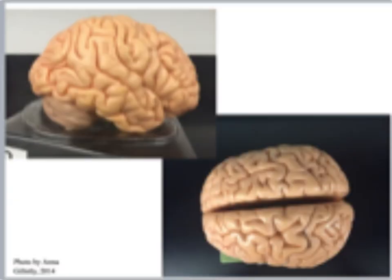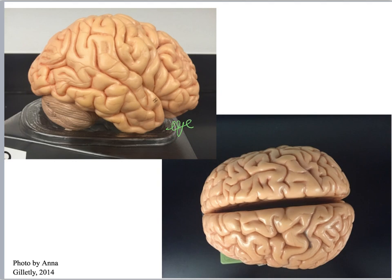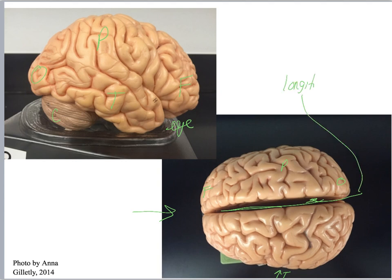Here we've got the brain models, and you've got variations of these with the practice atlas and the APR. F is for frontal, T is for temporal, P is for parietal, O is for occipital, C is for cerebellum. You can't see the insula because it's not opened up. This whole thing right here is the longitudinal fissure. If you pretend you're drawing your finger down this, that is your central sulcus — you can see it right there.